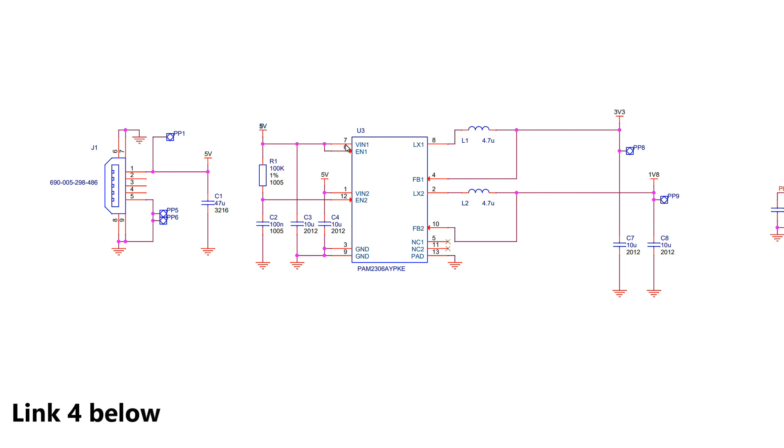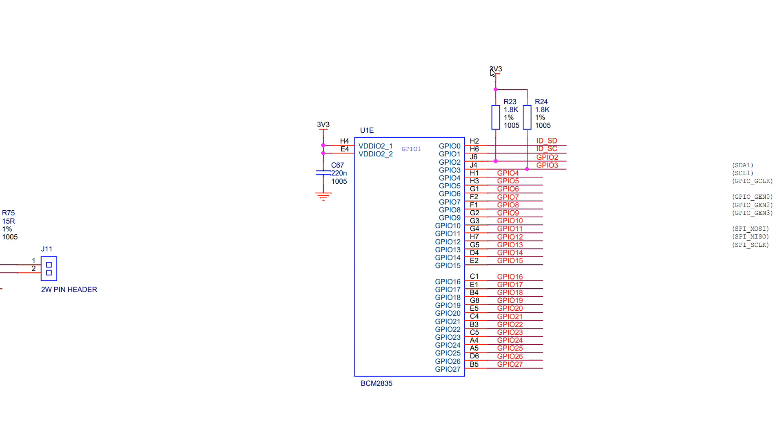So here's a schematic of the Pi Zero. This portion is the DC to DC converter and it drops the 5 volt USB input power down to 3.3 volts and 1.8 volts for the CPU, the pins, SD card, Wi-Fi, and anything else you're using.